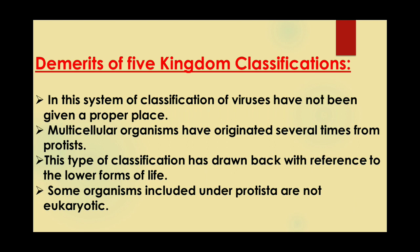The demerits of five kingdom classification: viruses have not been given a proper place in this system. Multicellular organisms have originated several times from the protists, causing issues in arrangement. This classification has drawbacks with reference to lower forms of life (unicellular organisms). Some organisms included under Protista are not eukaryotic.